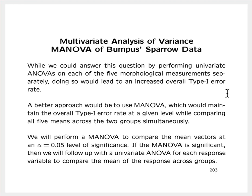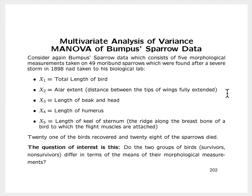While we could answer this question by performing univariate ANOVAs on each of the five response variables separately, doing so would lead to an increased overall type 1 error rate. Every time we perform an hypothesis test, we have an opportunity to commit a type 1 error. If we performed univariate ANOVAs comparing the means of each of the five variables across the two groups separately — doing an ANOVA for X1, then X2, through X5 — we would have five opportunities to commit a type 1 error. If we did each test at a 0.05 level of significance, the overall type 1 error rate for all tests combined would be something greater than 0.05, which is undesirable.